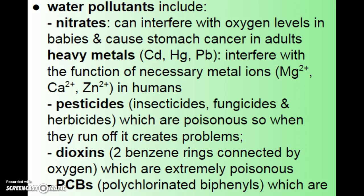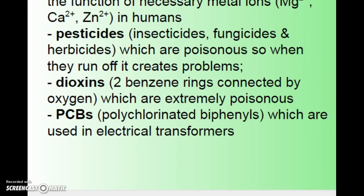Pesticides — including insecticides, fungicides, and herbicides — are poisonous, and when they run off they create problems, often starting the eutrophication process. Dioxins have two benzene rings connected by oxygen — they're extremely poisonous and a bad thing to get into our water. PCBs, or polychlorinated biphenyls, are associated with electrical transformers and shouldn't be getting into our water, but they end up in landfills and can eventually make their way into groundwater.